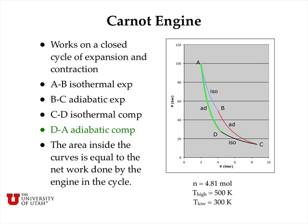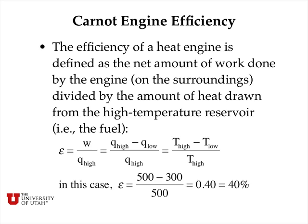Over the entire cycle, the area inside the curves is equal to the net amount of work done by the engine on the surroundings. For this particular illustration, I've used 4.81 moles of a monatomic ideal gas like helium, a high temperature reservoir for the isothermal expansion of 500 kelvins, and a low temperature reservoir for the isothermal compression of 300 kelvins. The efficiency of a heat engine is defined as the net amount of work done by the engine on the surroundings divided by the amount of heat drawn from the high temperature reservoir.